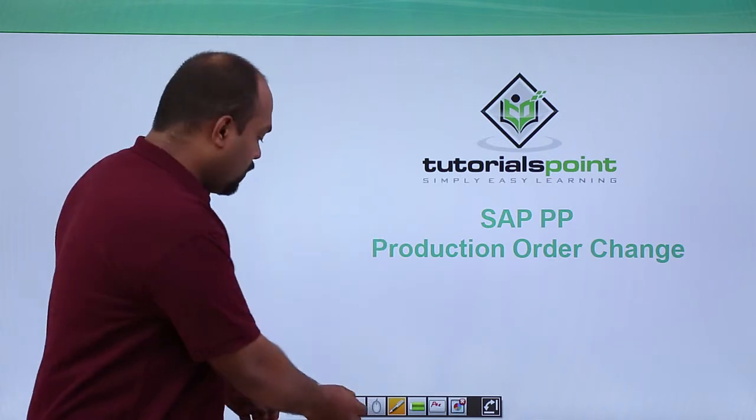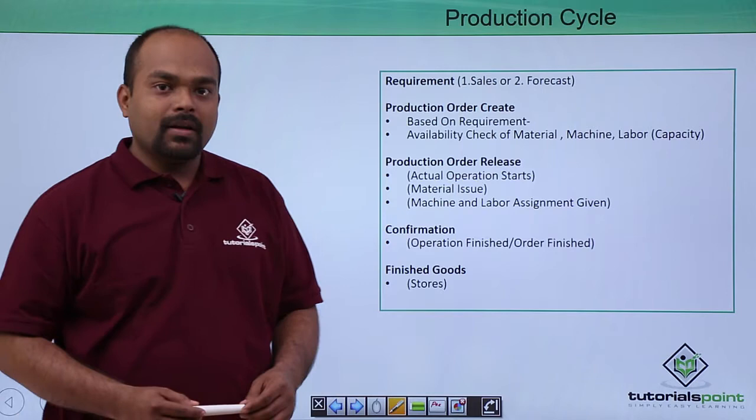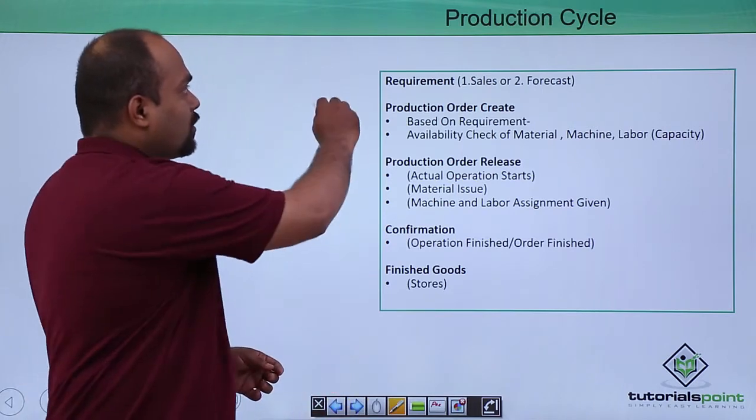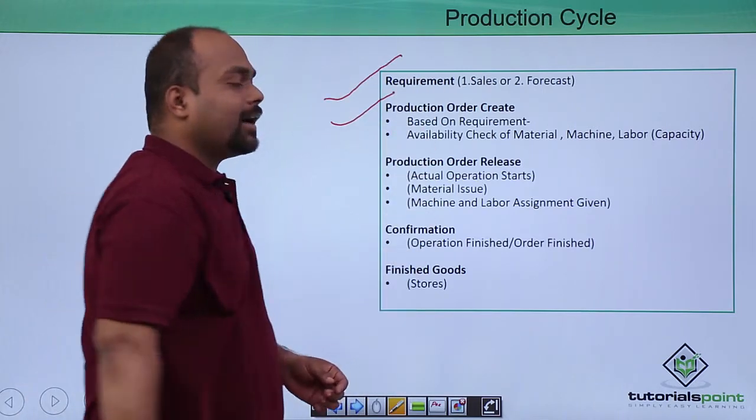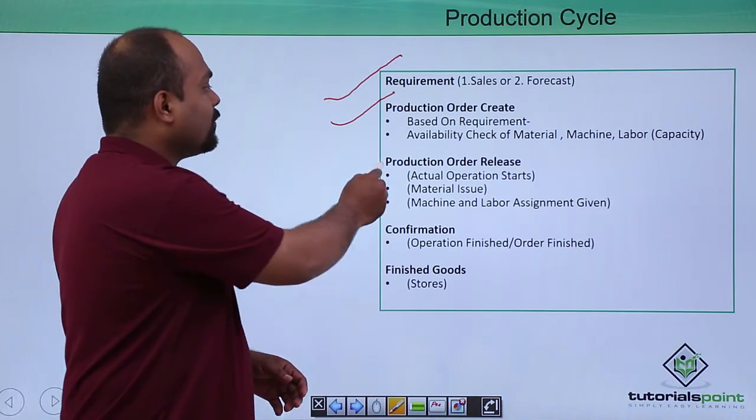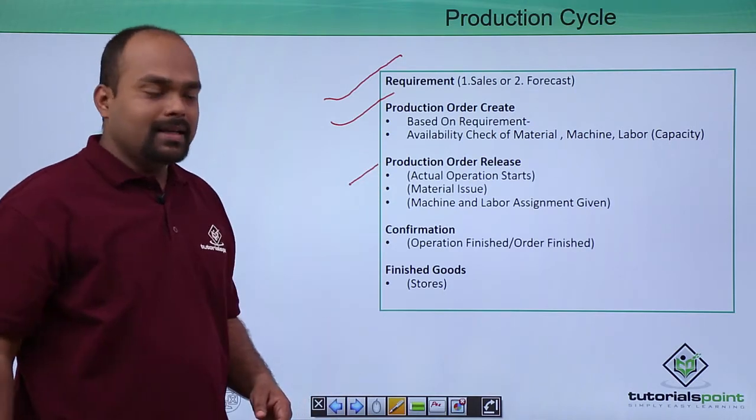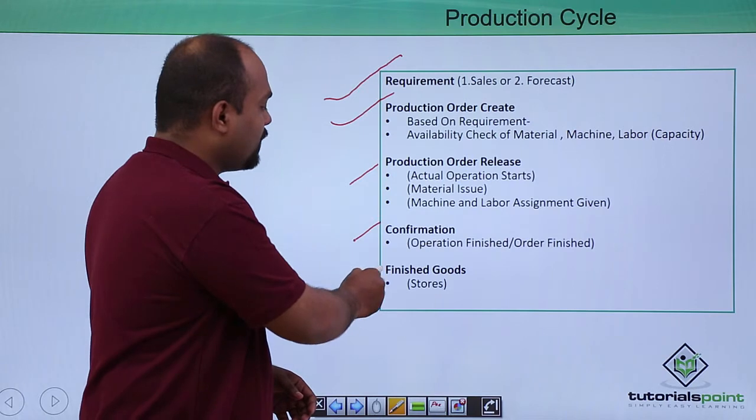We will go from the basic concept like the production cycle: requirement, production order create, then there is the concept of production order release, then confirmation and finished goods.